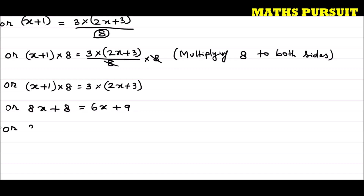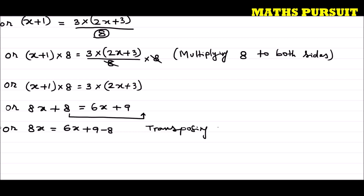Or I can write 8x is equal to 6x plus 9 minus 8. I have moved this 8 from the left hand side to the right hand side — that means transposing. My intention is to bring all terms with x to the left side and all constants to the right side of the equation.